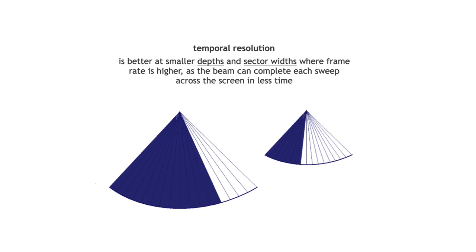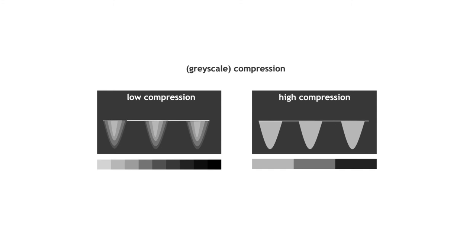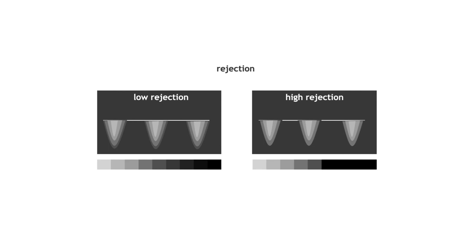Contrast resolution is mostly affected by pre- and post-image processing. Compression reduces the number of shades of gray in an image: low compression gives many grays and a fuzzier edge to Doppler profiles; high compression with only three grays gives a sharper, cleaner Doppler profile. Rejection involves setting a threshold beyond which the signal is blacked out, producing a crisper image.